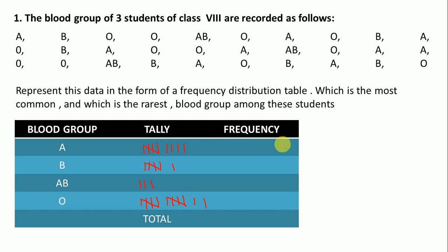B, then B, B, and the last one is O. After tally, we write the frequency. Count these lines. This is 5 plus 4 is 9, and this one is 5 plus 1 is 6, and the next one is 3.